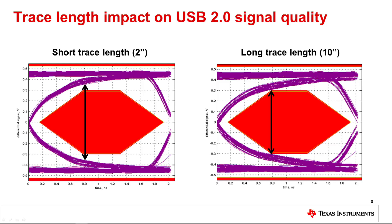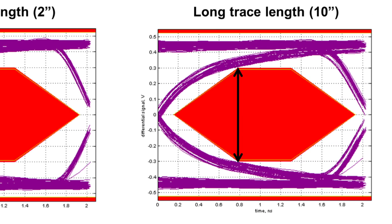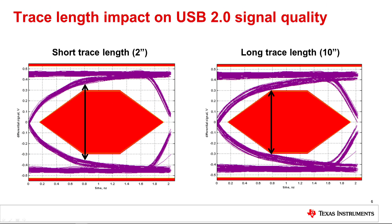Looking at the impact of trace length, on the left is an eye diagram from a very short trace layout of 2 inches. On the right is an eye diagram for a layout with a longer trace length of 10 inches. You can see there is a decrease in eye opening and some impact to eye height. This shows how trace length may affect the eye opening of a high speed signal.